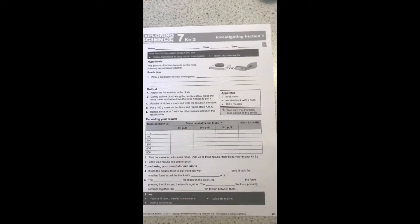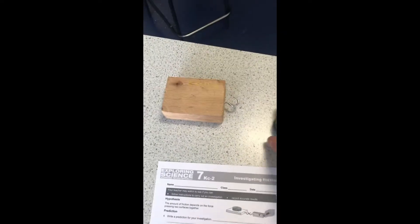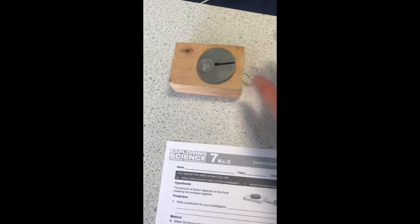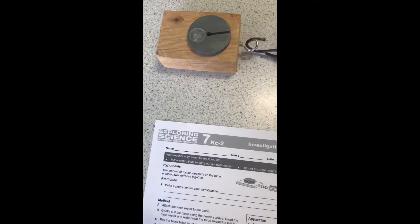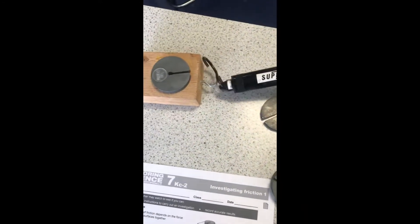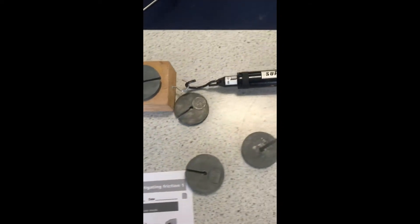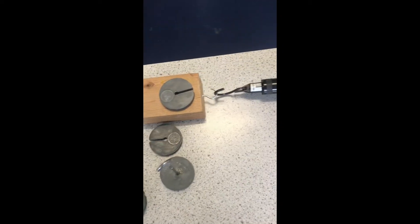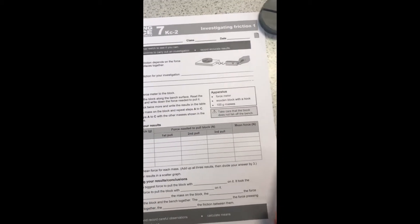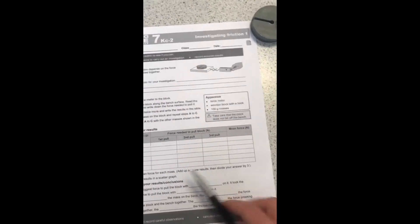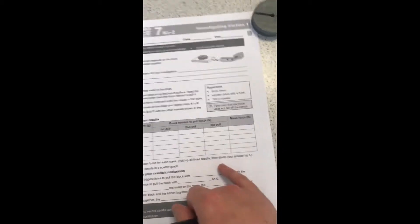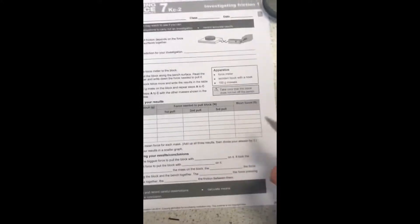In this experiment we will be adding masses to a wooden block and then measuring the force of friction between the wooden block and the table using a Newton meter. My prediction for this investigation is as the mass on the block increases, the force of friction will increase at the same rate.